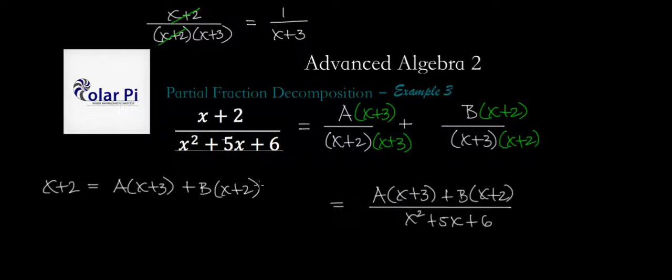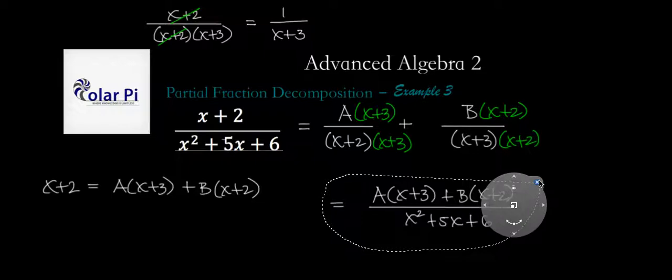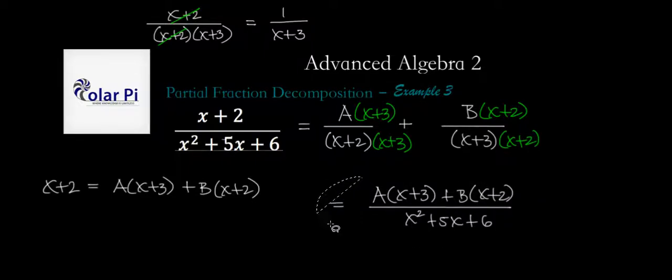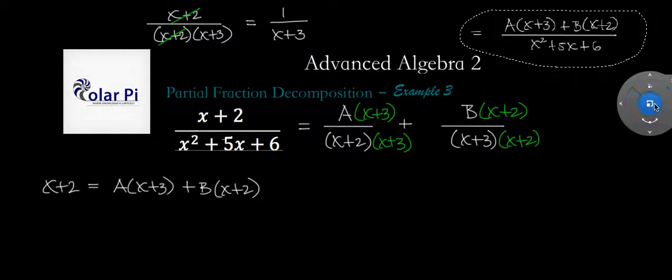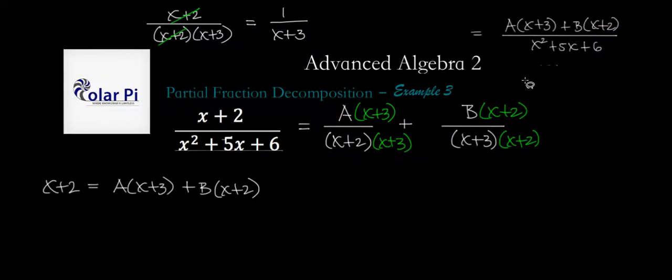Now, if you've watched either of the previous two examples, you know that at this step, you have two options. One of them is doing more algebra, and the other is what we called the clever option. So we're going to use the clever option to help us figure out what A and B have to be.